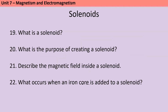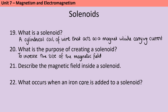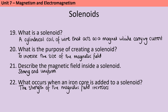A solenoid is a loop of wire that's been curled around and around to make a sort of spring shape. As long as it's carrying current, it will function as a magnet. The purpose of creating that solenoid is that you're lining up the field lines, and therefore you're creating a magnet that's much more powerful than a single straight wire on its own. Inside that solenoid, the magnetic field is uniform and it is strong. But if we add an iron core to it, then we can make it even stronger.